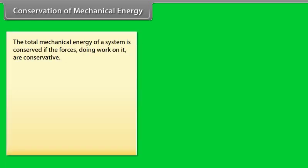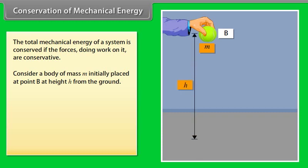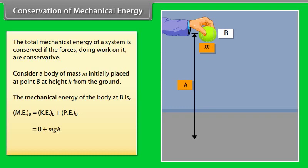Conservation of mechanical energy. The principle of conservation of total mechanical energy states that the total mechanical energy of a system is conserved if the forces doing work on it are conservative. Let us understand it with an example. Consider a body of mass m initially placed at point B at height h from the ground. The mechanical energy of the body at B is mechanical energy of the body at B equals kinetic energy of the body at B plus potential energy of a body at B equals zero plus mgh equals mgh.